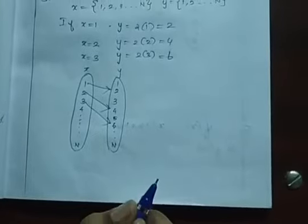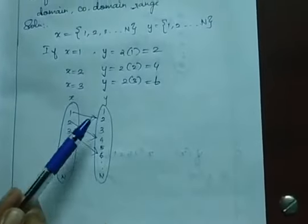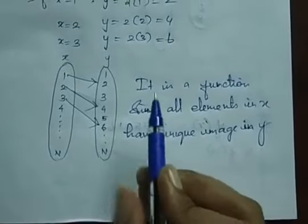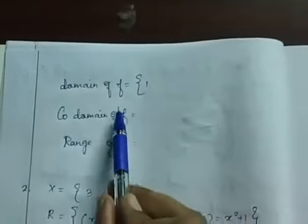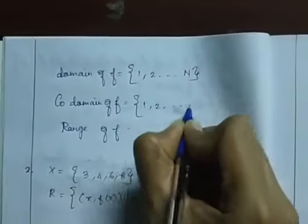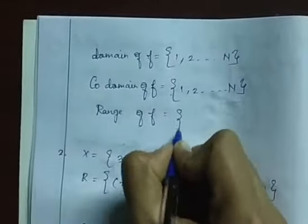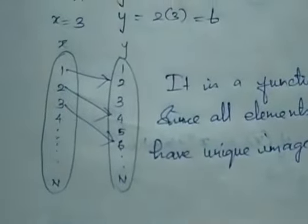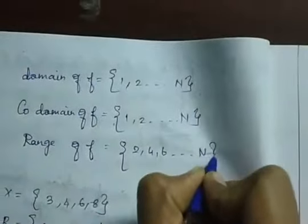It is a function, because all elements in set X have a unique image in set Y. Since all elements in X have a unique image in Y, it is a function. Domain of f is {1, 2, 3, ..., n}; co-domain is {1, 2, 3, ..., n} — the first set and second set respectively. Range is the set of values obtained: {2, 4, 6, 8, 10, ...}, i.e., even natural numbers.